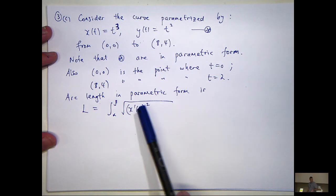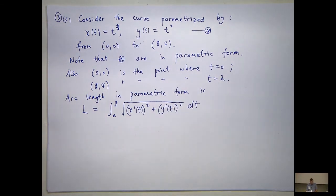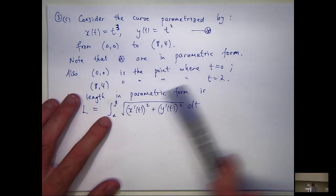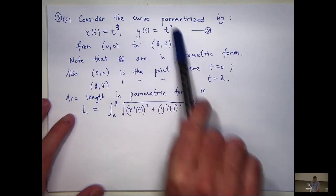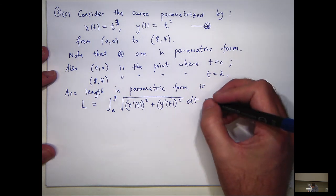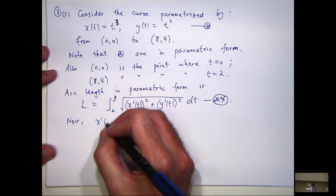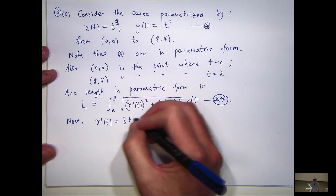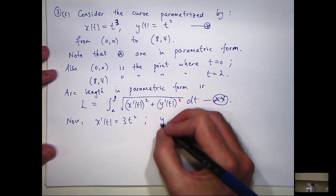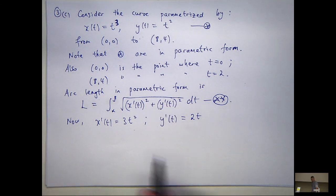The arc length in parametric form is: L = ∫ from α to β of √(x′(t)² + y′(t)²) dt. You can see how it's slightly different from the previous setup. In this case α = 0 and β = 2, and we just need to calculate the derivatives from the parametric equations.